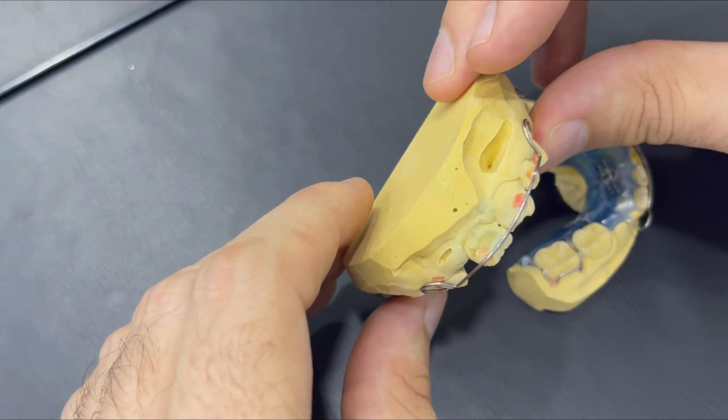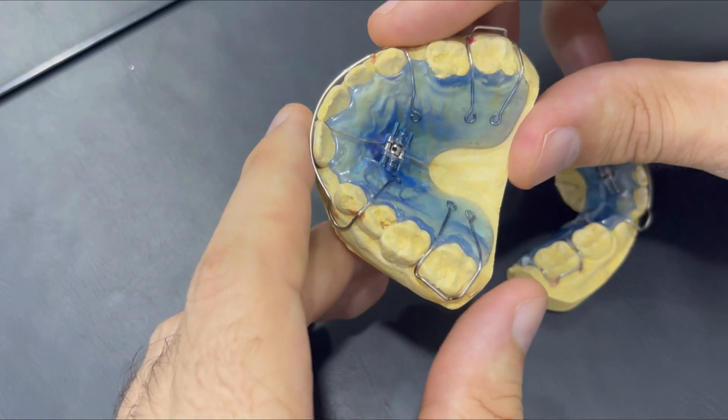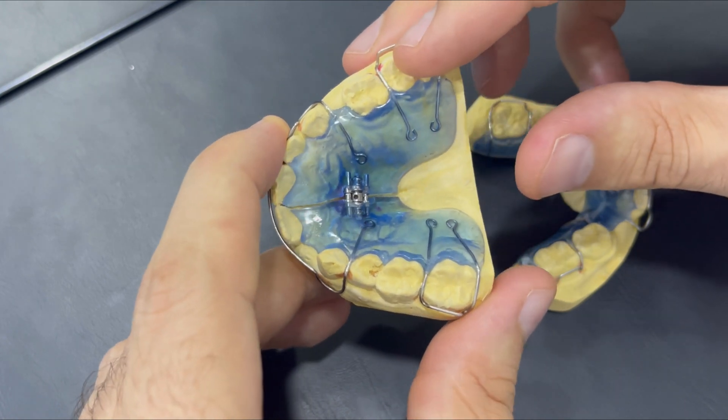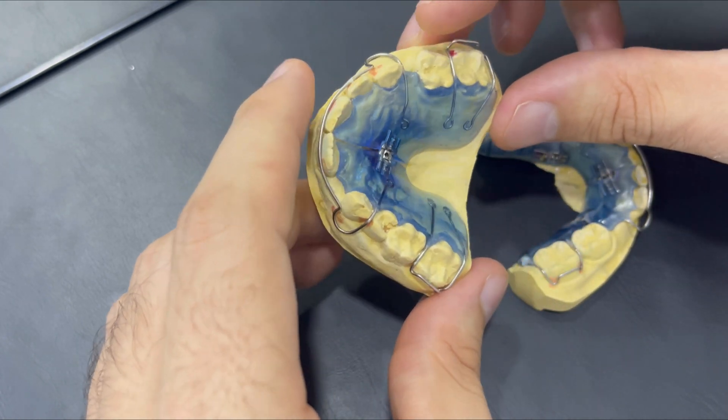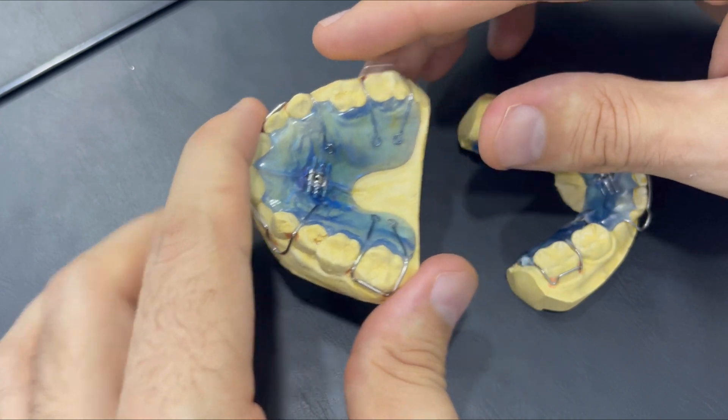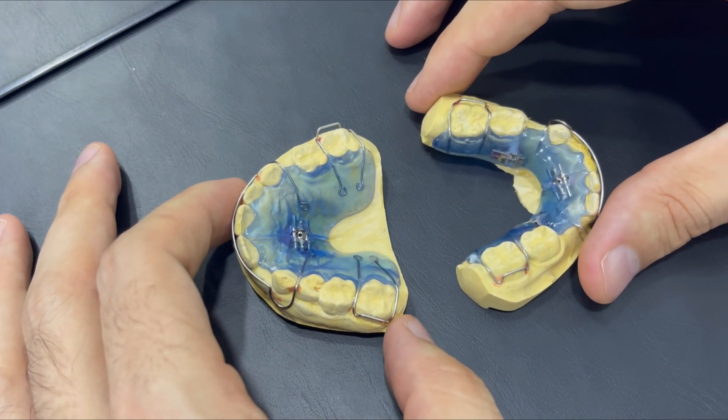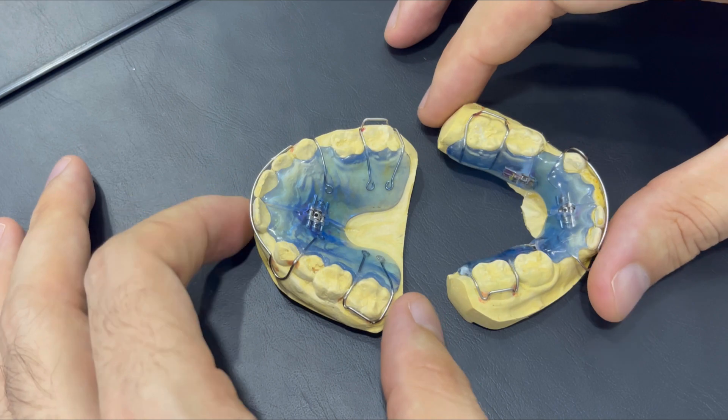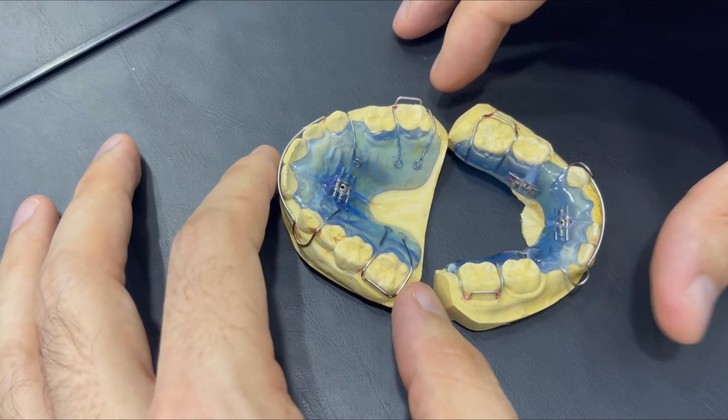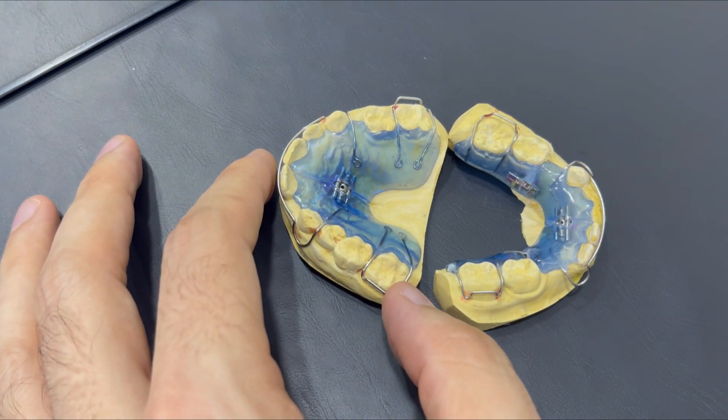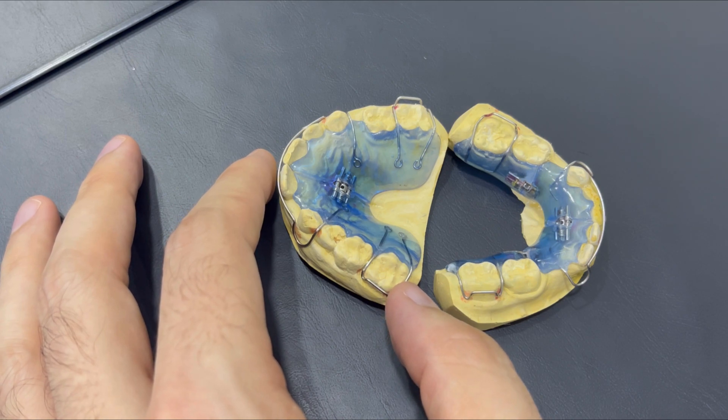The question now is why we need expansion in some cases and some cases we don't do any expansion. The expansion is logically to provide more space for the teeth to accommodate, to align, and to have more space for rotated teeth, tilted teeth, inclined, etc.